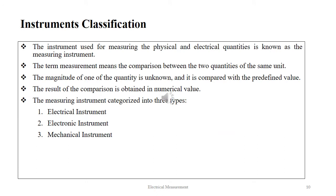The instrument used for measuring the physical and electrical quantities is known as the measuring instrument. The term measurement means the comparison between two quantities of the same unit. The magnitude of one of the quantities is unknown and it is compared with the predefined value. The result of the comparison is obtained in numerical values. The measuring instrument is categorized into three types: electrical instrument, electronic instrument and mechanical instrument.